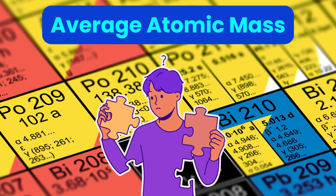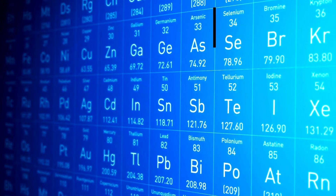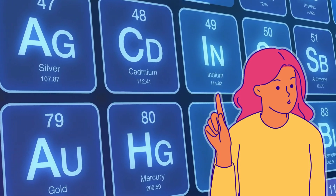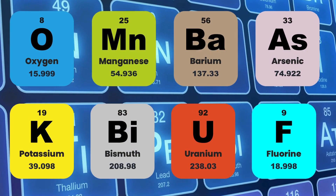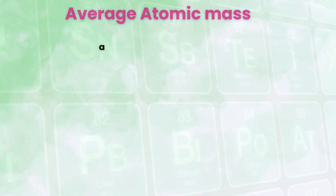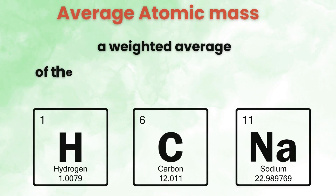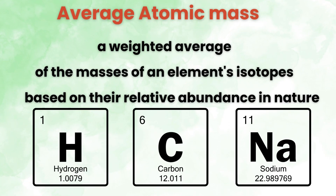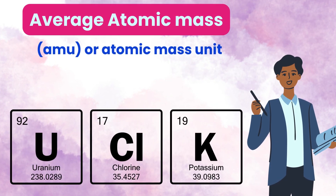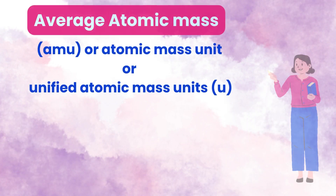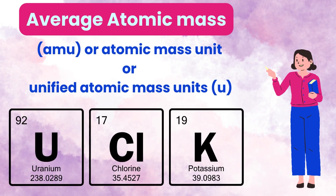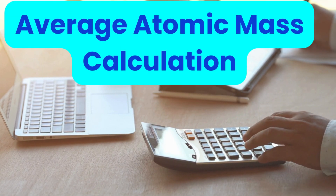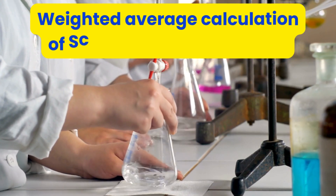Average atomic mass. Is the mass number shown on the periodic table? No. Instead, do you see a decimal number at the bottom of each element square? That is the average atomic mass of the atom. Average atomic mass is a weighted average of the masses of an element's isotopes based on their relative abundance in nature. The unit for average atomic mass is AMU, or atomic mass unit, or unified atomic mass units, which is just U. To find the average atomic mass, we do a weighted average calculation similar to how we figure out semester grades for science.